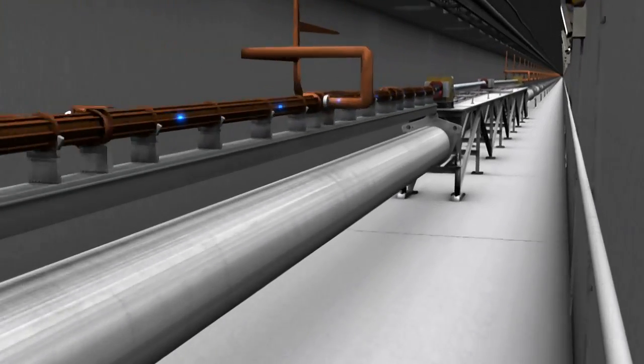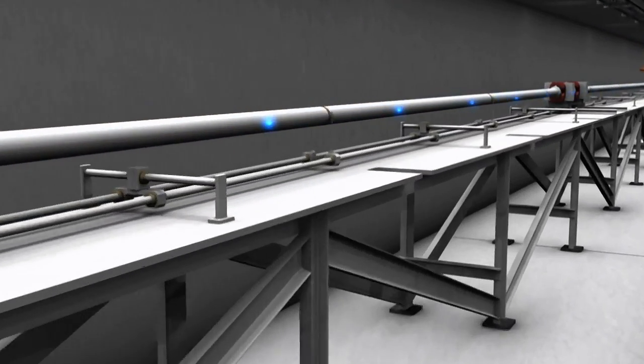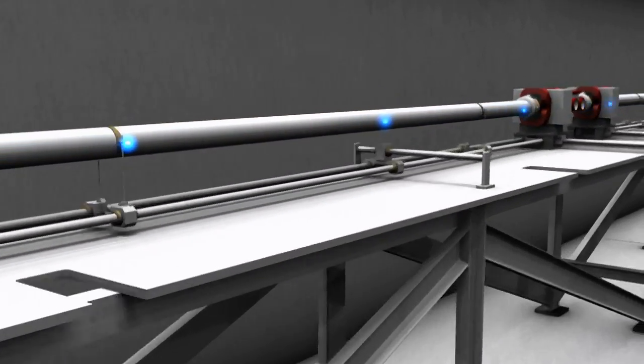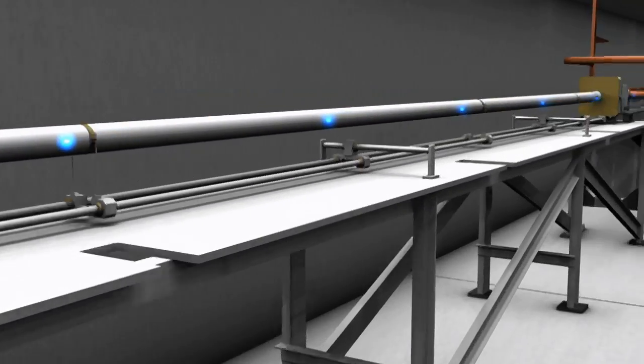The electron bunch then encounters the second bunch compressor. The second bunch compressor is longer than the first, because the electrons in the pulse now have even greater energy.